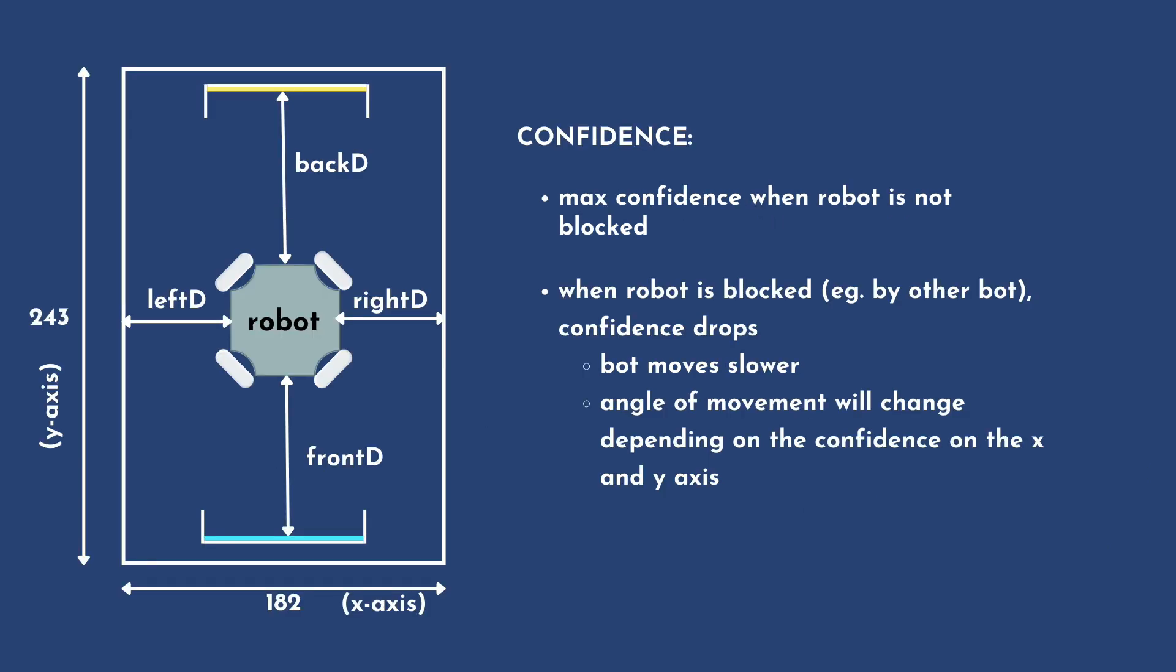Confidence takes in both X and Y confidence. When the robot is not blocked, it has maximum confidence and hence will run at faster speed. However, when it is blocked, for example by another robot on the field, the confidence drops, causing the board to move slower. Depending on which axis the confidence drops, the angle of movement will change.